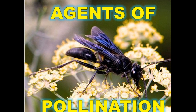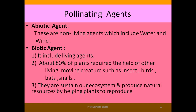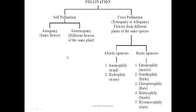Hello dear students. In my last video we discussed pollination and two types of pollination. Today we will discuss agents of pollination, that is biotic and abiotic. Abiotic agents are non-living agents which include water and wind, that is physical factors. Biotic agents include living agents — about 80% of plants require the help of other living, moving creatures such as insects, birds, bats, and snails.